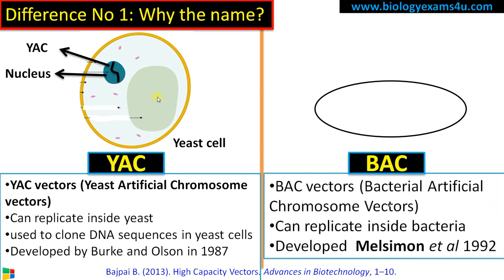Whereas BAC is called bacterial artificial chromosome. It can replicate inside bacteria. So this is a bacterial genome and these are the transformed BAC vectors. So it can replicate inside bacteria or the host is bacteria. It was developed by Shizuya and his colleagues in 1992.